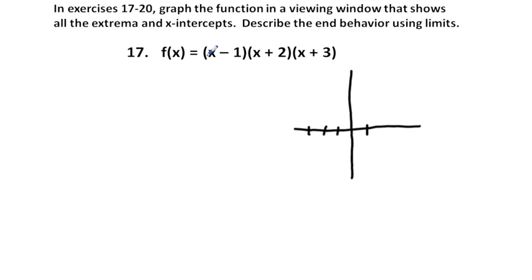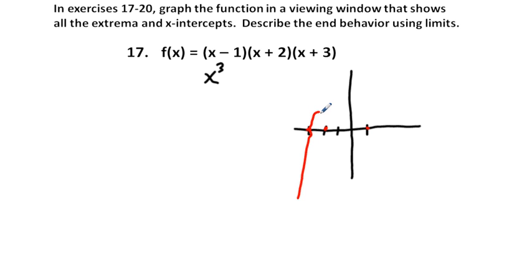The sketch of that has zeros at x equals negative 3, x equals negative 2, and x equals 1. If we go ahead and expand everything out, we get a leading term of x cubed. With an odd-degreed positive function, we're going to start from quadrant 3 going up toward infinity. There's a relative maximum, and the y-intercept is going to be negative 6.